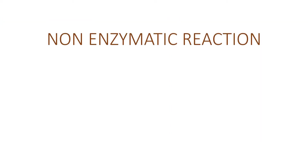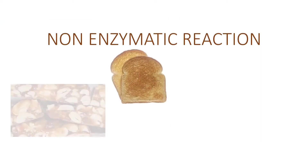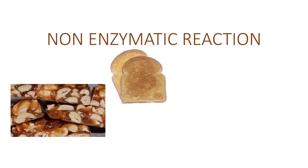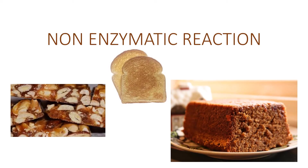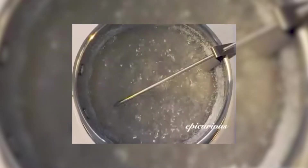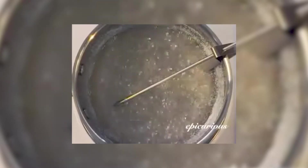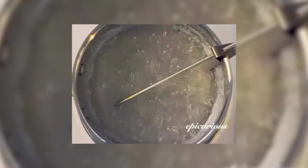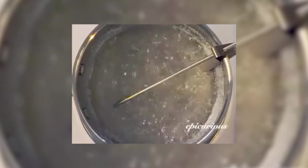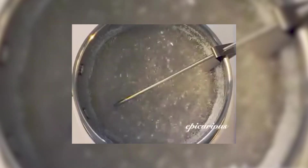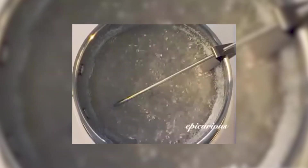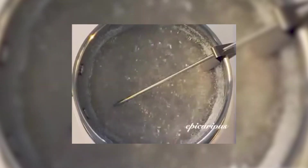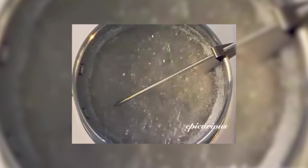Non-enzymatic browning is a chemical reaction without the action of enzymes. Other types of non-enzymatic browning are caramelization in sugars, the Maillard reaction in milk or meats, and dextrinization.